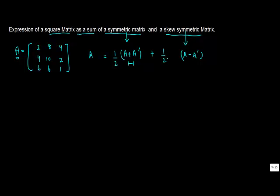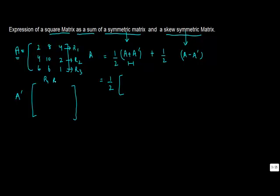Let's see the proof of this. We can write this as half of A plus A-transpose. First we need to find out the value of A-transpose. We take rows R1, R2, R3 and write them in a columnar format.